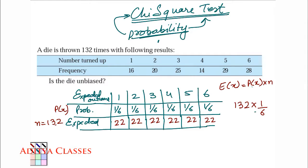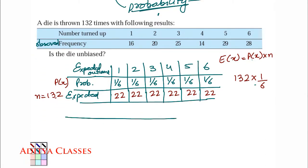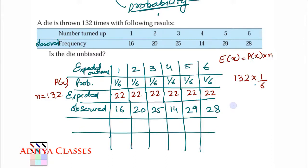We can already see that we were given the frequencies that were observed. Following results were obtained, so this was the observed frequency. Now I have my expected frequency. What are our observed frequencies? The observed frequencies are 16, 20, 25, 14, 29, and 28. So now, what is the formula for chi-square?